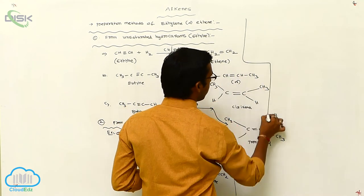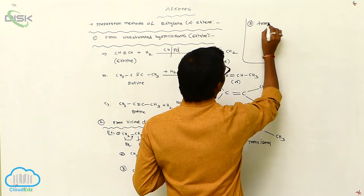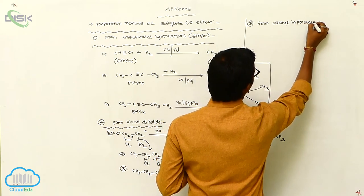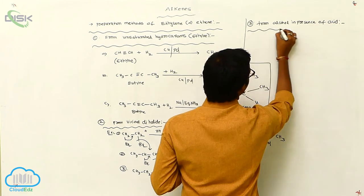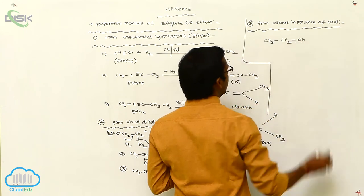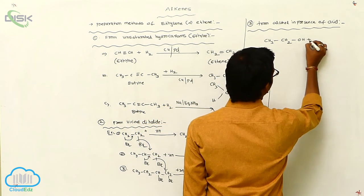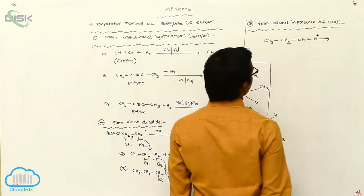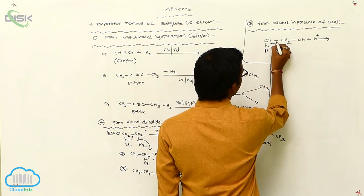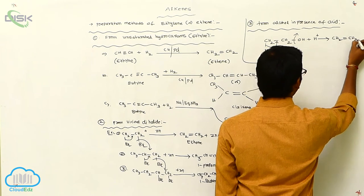The third method is from alcohol. Alcohol in the presence of acid undergoes reaction. For example, ethanol CH₃CH₂OH in the presence of acidic medium (H⁺): the sigma bond shifts, OH is eliminated as H⁺ and OH⁻ (water), and it gives CH₂=CH₂ (ethylene).